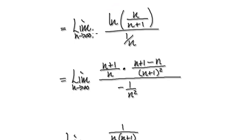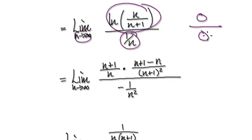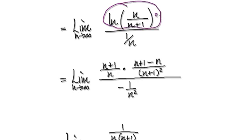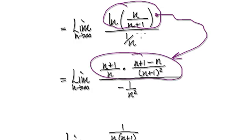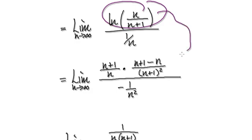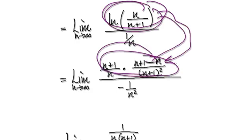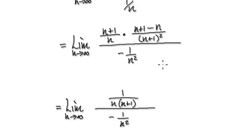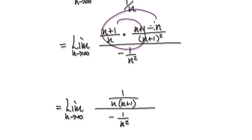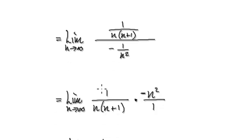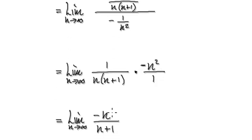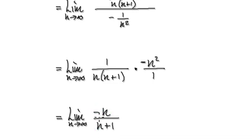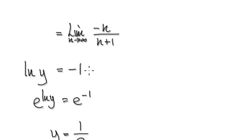Applying L'Hôpital's rule: differentiate the top, which gives you this, and differentiate the bottom, which gives you this. You may need to pause and think this through yourself. Differentiating this gives you this. Tidy this whole thing up — this cancels out with this, and this in effect is just the number one. Tidy up: this whole thing here becomes this. Tidy up further and it gives you this. Then as n heads towards infinity, you know this is going to be one, but you've got a minus here, so it's going to be minus one. So natural log of y equals minus one.